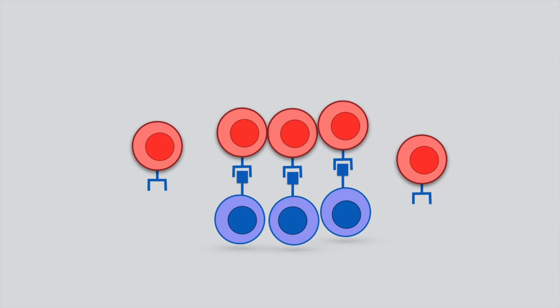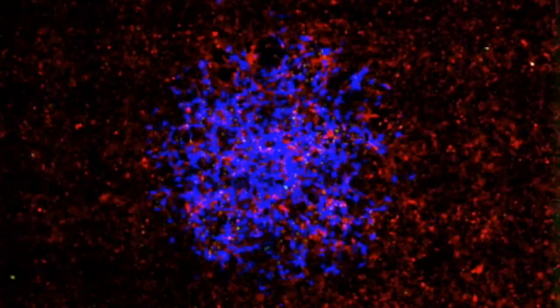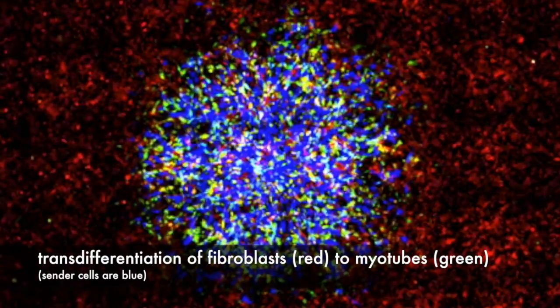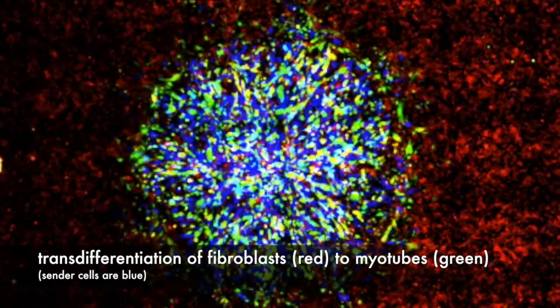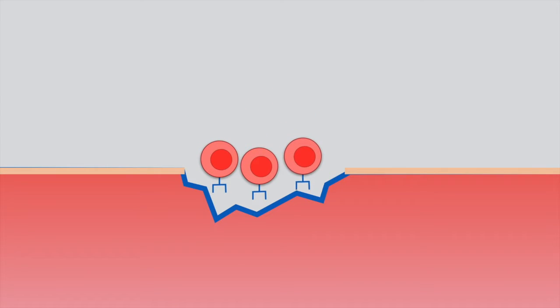Here, the red cells are activated only when they contact the blue cells. When activated, the cells express the master regulator MyoD, which drives the cells to form multinucleate muscle cells. It's possible that these sorts of responses could be used to induce cells to repair or regenerate tissue only where they detect damaged signals.